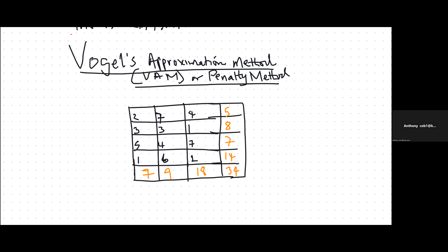Welcome to this video where we are discussing the Vogel's Approximation Method. This is our third method of solving a transportation problem. This method is also known as the penalty method. We can call it the VAM, which is the abbreviation of the Vogel's Approximation Method.